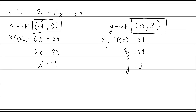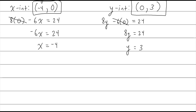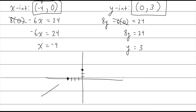Now let's plot those points. Negative 4 on x means 4 to the left, up 0 — it has to be on the x-axis, that's what the x-intercept is. The y-intercept is at (0, 3): up 1, 2, 3. Then draw the line through those two points. The line represents all the points that satisfy the equation — I can plug in any point along this line and it would work. All I needed was the x and y-intercept to find the line.